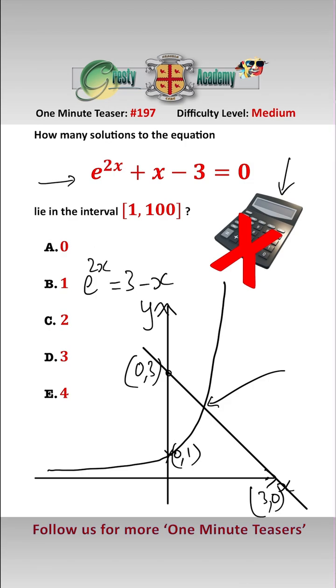Now all we need to do is decide, is it in the interval 1 to 100? So let's have a look at the point here, 1, 0, and draw the vertical line up like that.